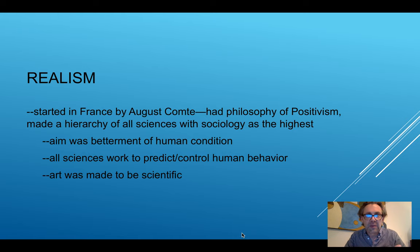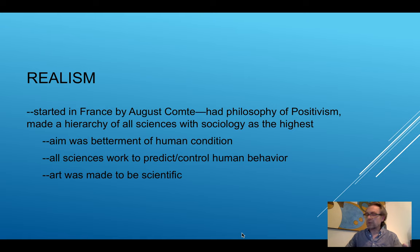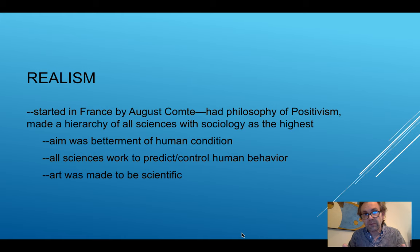The third idea behind realism, according to Comte, was that art itself should be scientific. Art is going to predict or attempt to control human behavior; art is going to attempt to better the human condition. So in that essence, art is scientific.